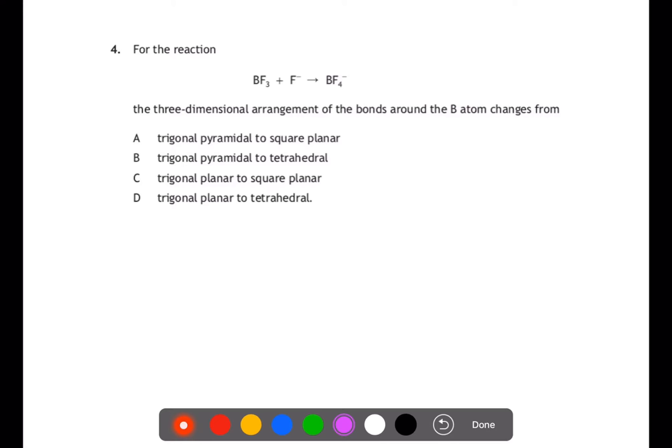For the reaction BF3 plus F minus to become BF4 minus, what is the three-dimensional arrangement of bonds? Here you have to use the VSEPR rules. Looking first at BF3, boron has three electrons in its outer shell and we are adding three atoms to that. We have no charge. So overall there are six electrons. If we divide by two to get electron pairs we have three, and if we take off the three atoms which are attached we find we have no lone pairs. This means that we start in a trigonal planar arrangement of bonds. So we can eliminate A and B.